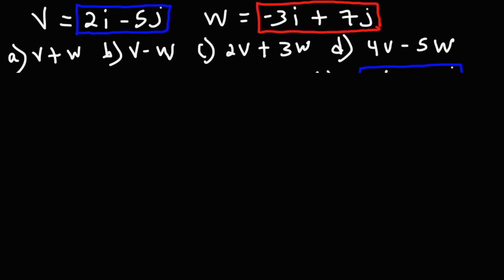Now let's move on to part c: 2v plus 3w. Not only are we adding vectors, we're also multiplying these vectors by scalar quantities. We're multiplying vector v by the scalar 2, and vector w by the scalar 3.